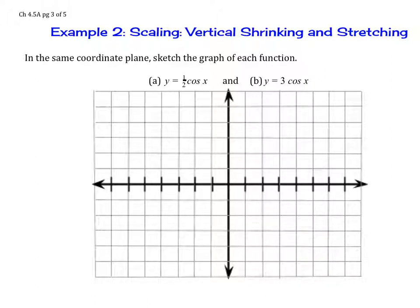So y equals 1/2 cosine of x. Let's graph that. We know the period is 2π, and then label the x-axis. So 2π, half of 2π is π, half of π is π/2, then this is 3π/2. Then π, 2π, this is 3π, this would be 4π. Then 3π, 5π/2, and 7π/2.